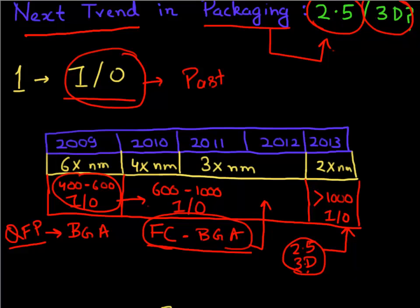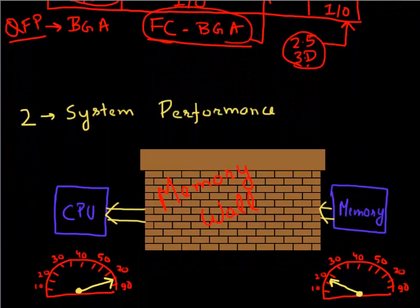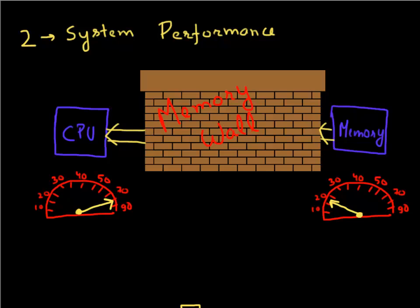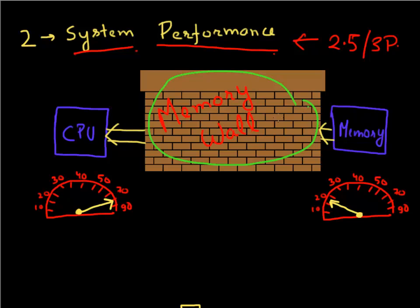The second thing which is driving this change is improvement in the system performance which is enabled by going to this 2.5D or 3D packages. So there's this term which is frequently used called the memory wall. The overall system performance is limited by the bandwidth at which your CPU can communicate with your memory.